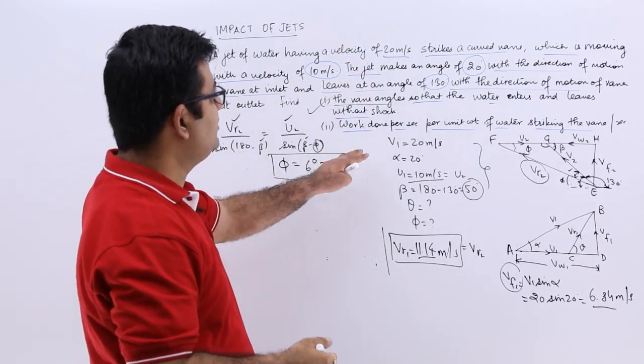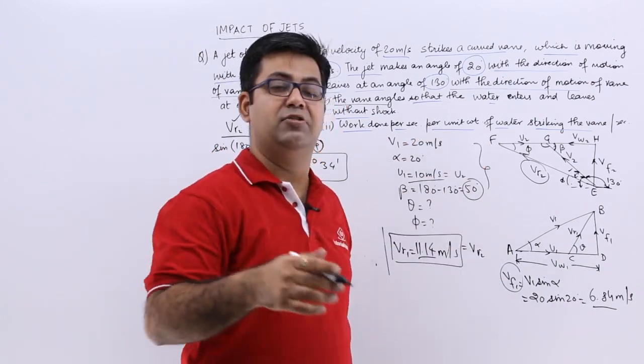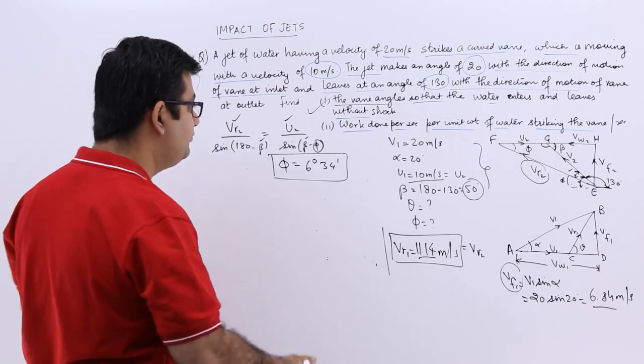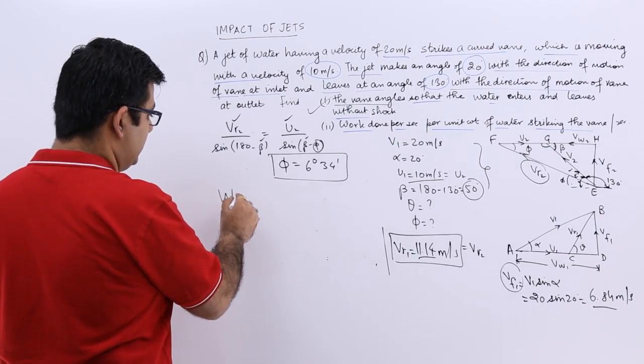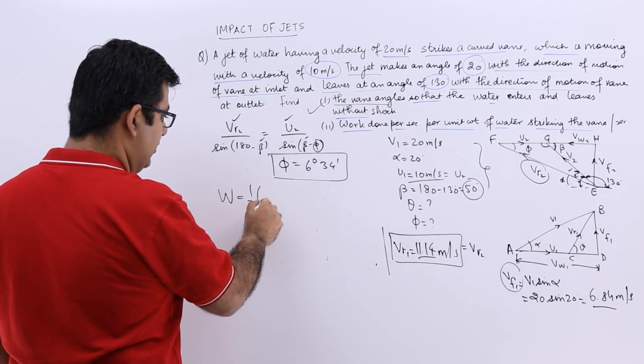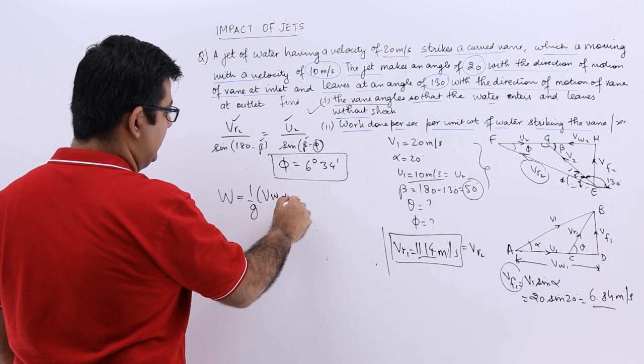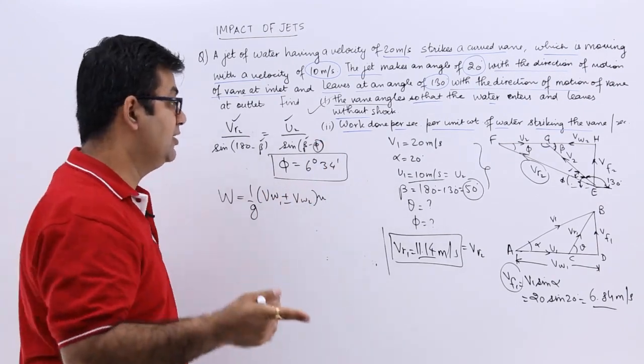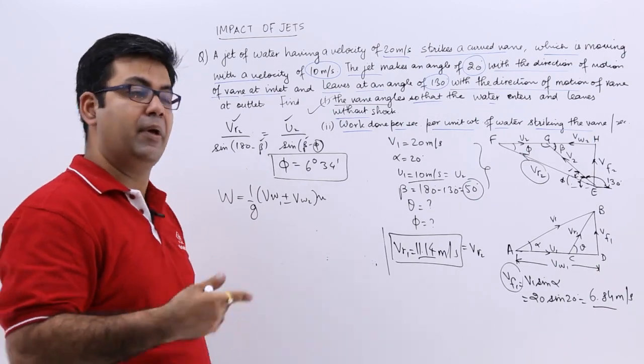The second part is work done per second per unit weight of water striking the vane per second. Again it is a very straightforward formula application. That becomes 1 by g times VW1 plus minus VW2 into U. Now plus minus, will it be plus or will it be minus?